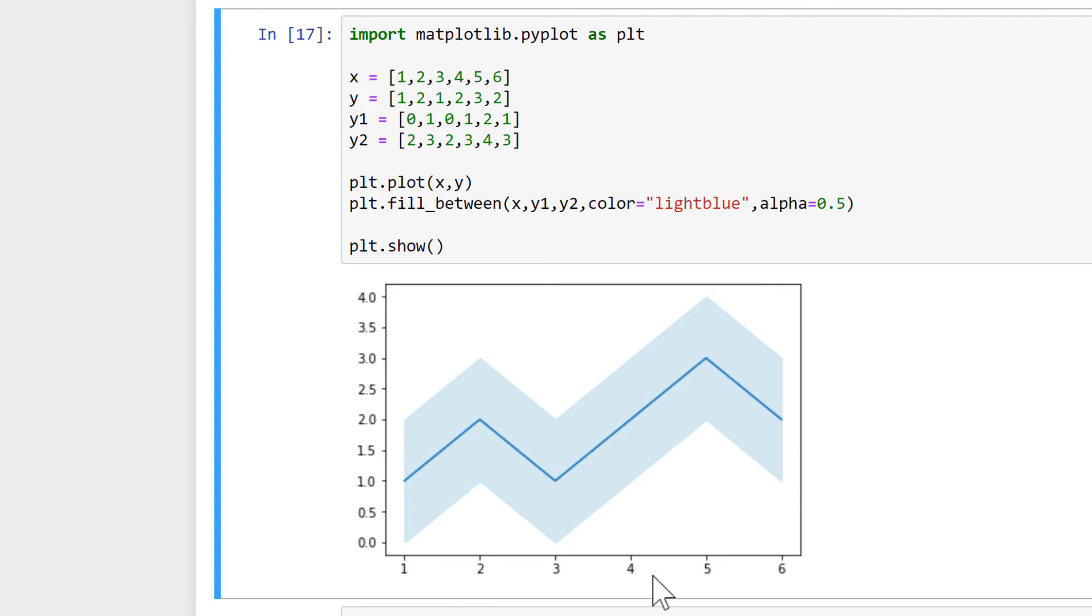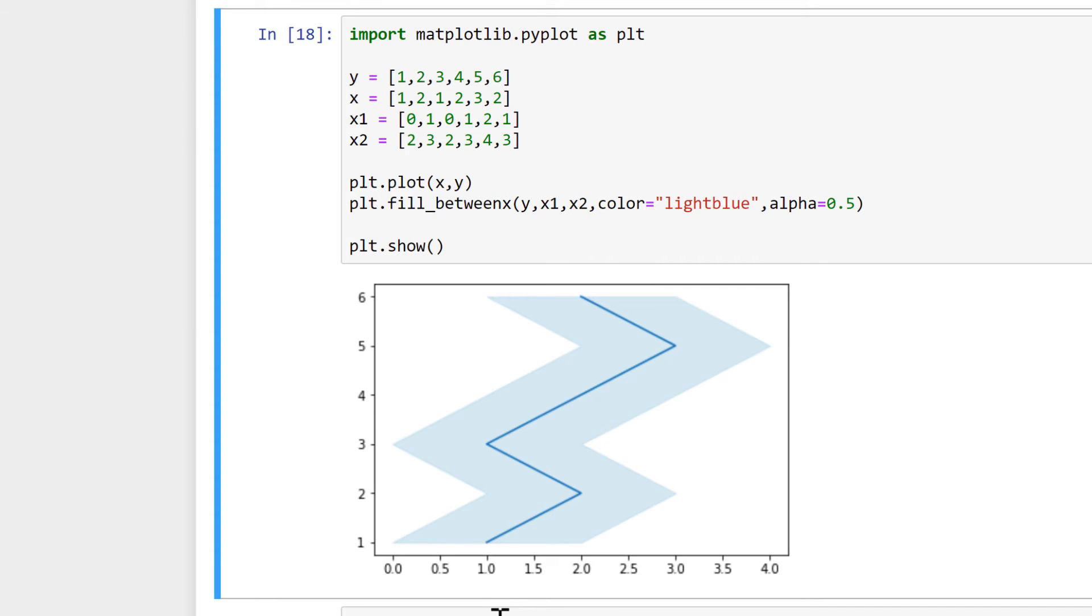Now if you want to fill on the X axis instead of on the Y axis, then you need to put an X in here to change fill_between to fill_betweenx. And then all of the values need to be swapped around. So this becomes Y, this becomes X, this is X1 and this is X2. And then here this becomes Y, this is X1 and this is X2. And we'll run this. And now the fill is the other way around, so it's filling on the X axis instead of on the Y axis.